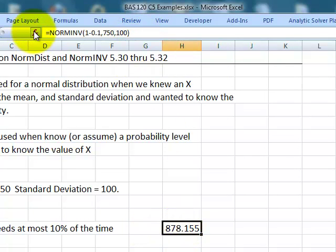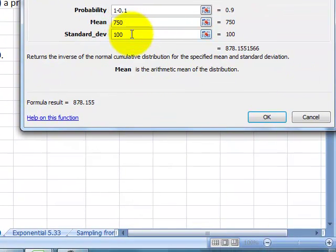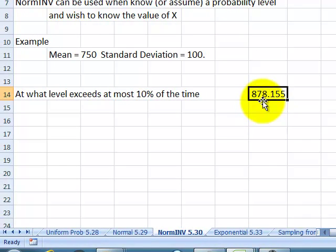Let's do our NORMINV, and we'd say the probability. Remember, the cumulative probability is 1 minus 0.1. Or we could have put in 0.90, because we want the probability from left to right. The probability that it's on the far right side of the curve is going to be 1 minus our 10%, which is 0.9. Our mean is 750, and our standard deviation is 100. So the number is at 878 and higher happens 10% of the time.